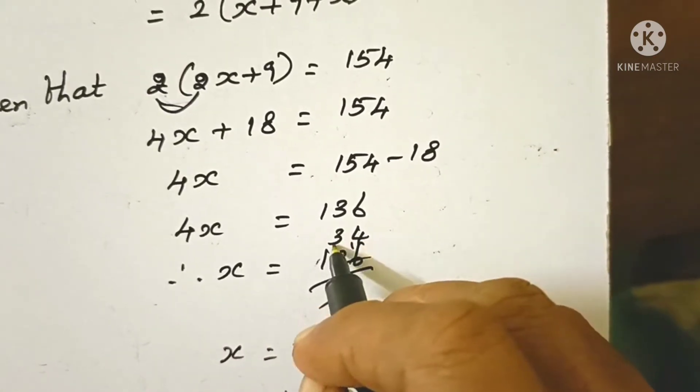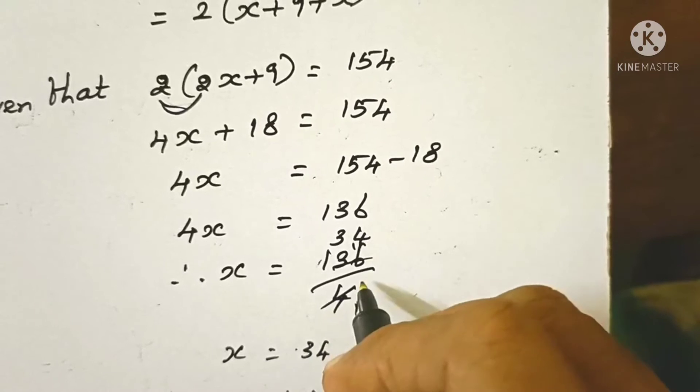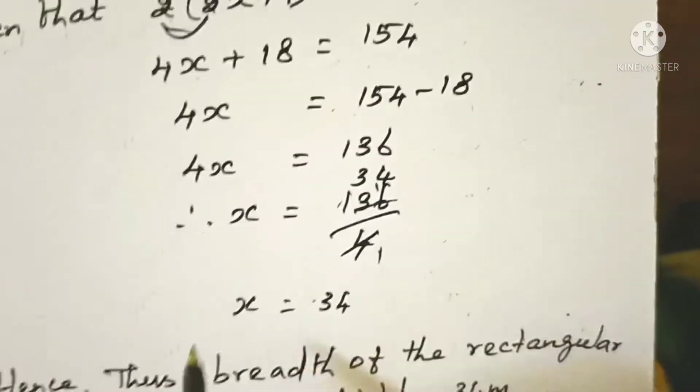Dividing 136 by 4: 1 times 4 is 4, 3 times 4 is 12, remainder 1, 4 times 4 is 16. Therefore, x = 34.